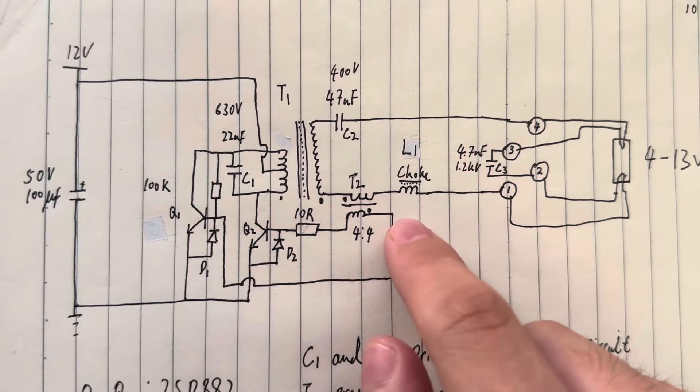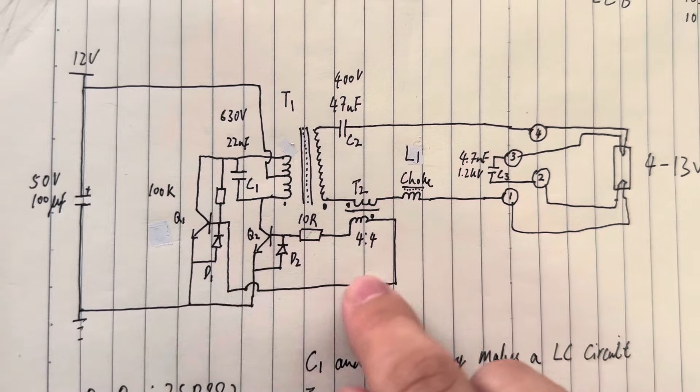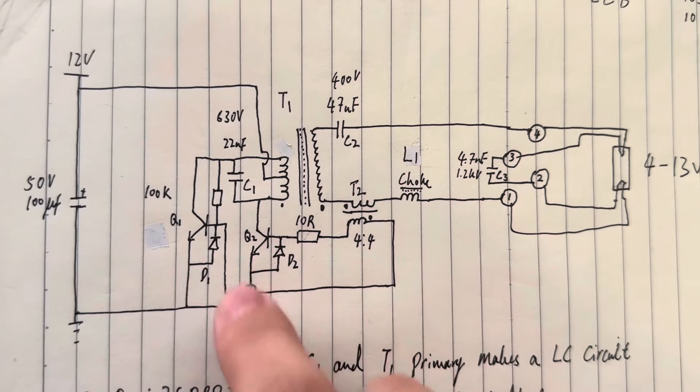As this becomes negative, the current will actually be pushed through, and here coming back through the diode as well.